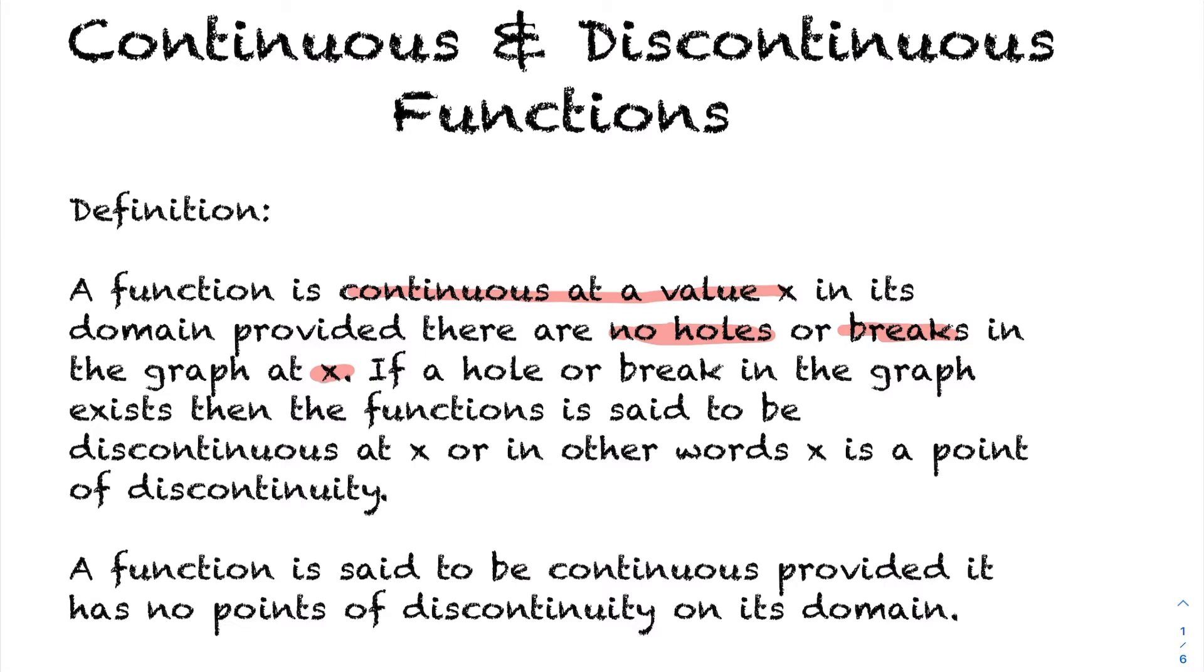When you define continuity it's defined at a point, not as the whole domain at once. You would say a function is continuous at x, at a specific value first, and at that specific value when you graph your function you don't want to see any holes or breaks in the graph, and we'll do some examples of this.